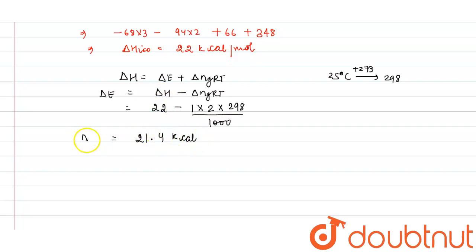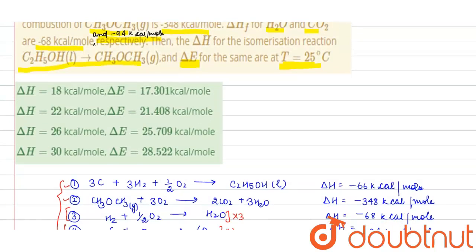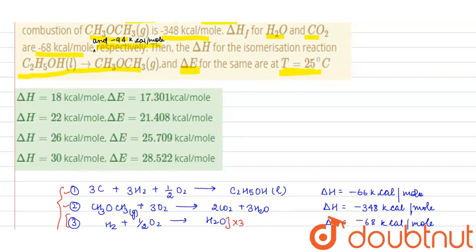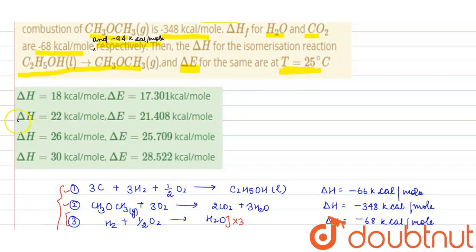This is the value of your internal energy delta E. Now check out the option which one is suitable. So here delta H value is 22 and delta E value is 21.4. So most approximate answer is this. So option B is your correct answer. Option B is your correct answer. Thank you.